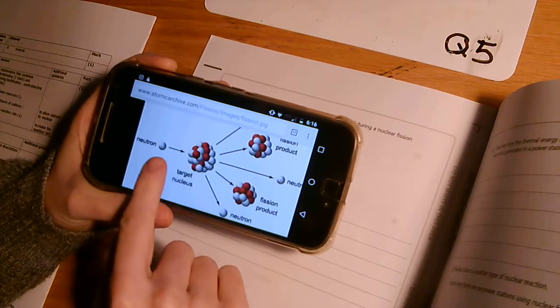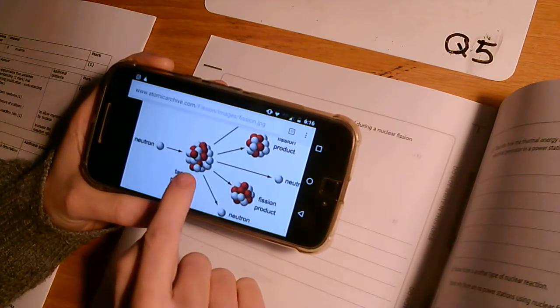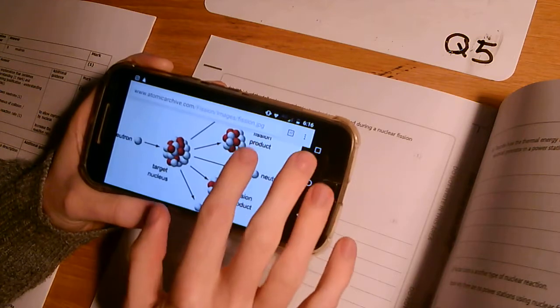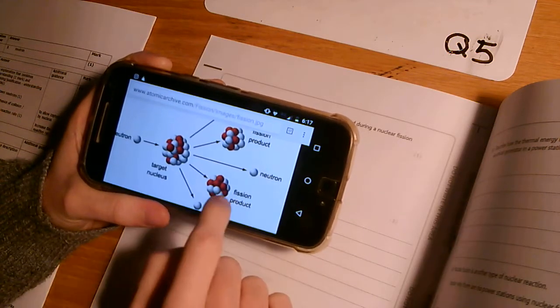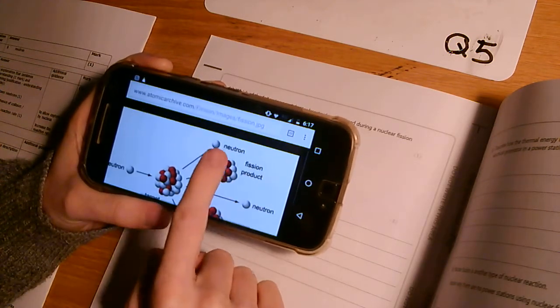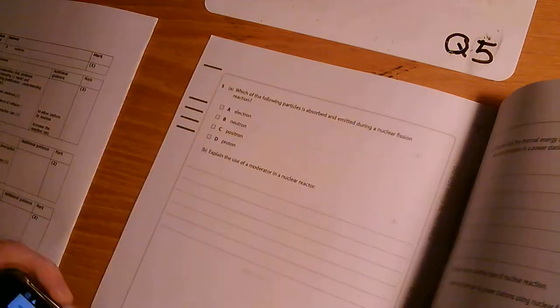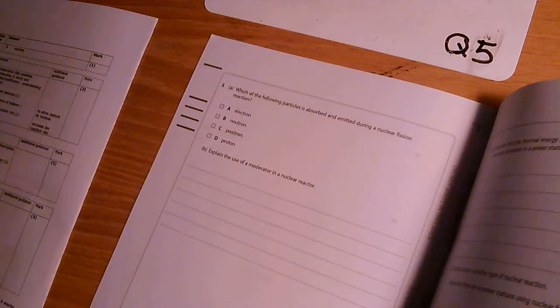So a neutron comes in, it hits the nucleus, it blows this thing up, the target nucleus. You've got the smaller fission products, also known as daughter nuclei, and you've got these spare neutrons that come off as well. So absorbed and emitted, that's got to be the neutron.